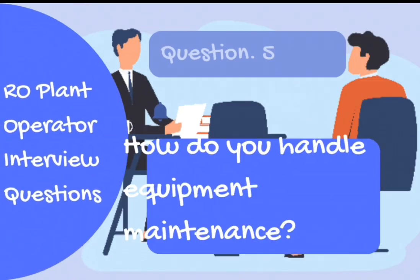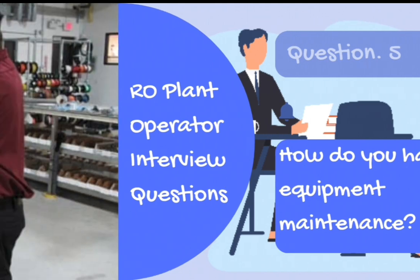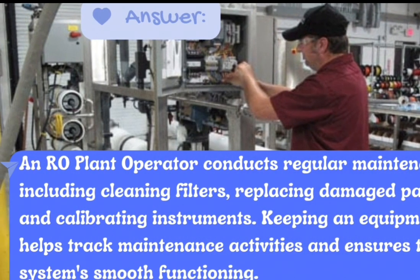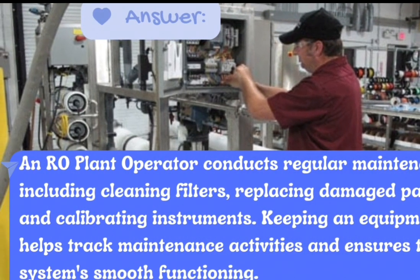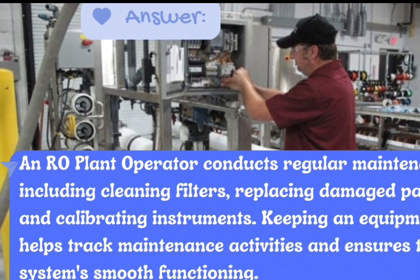Question number 5: How do you handle equipment maintenance? Answer: An RO plant operator conducts regular maintenance, including cleaning filters, replacing damaged parts, and calibrating instruments. Keeping an equipment log helps track maintenance activities and ensures the system's smooth functioning.